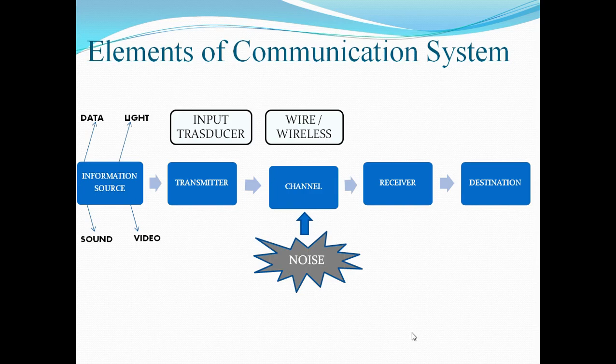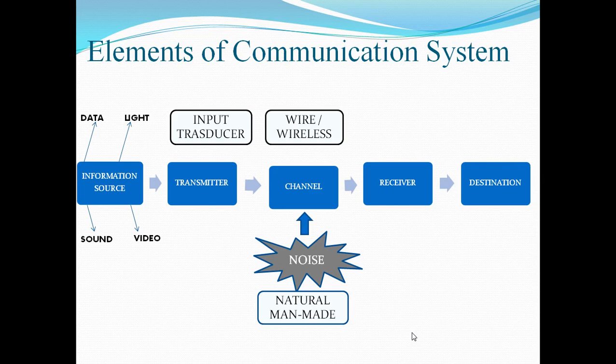There are two types of noises. One is natural noise, another is man-made noise. Natural noises are the noise made by nature, like thundering. Man-made noises are the noises made by humans, like industrial noise, vehicle noise, or other man-made noise.